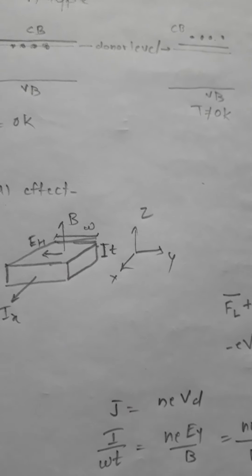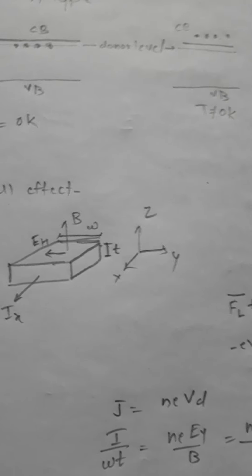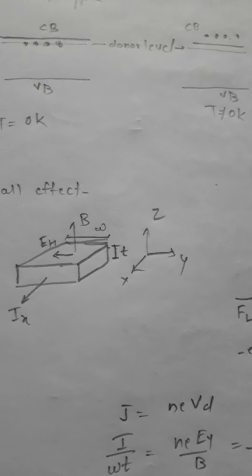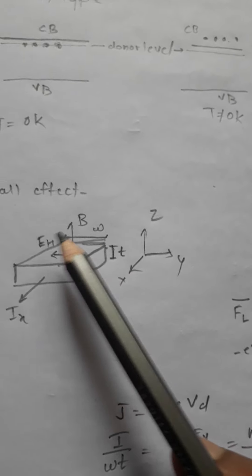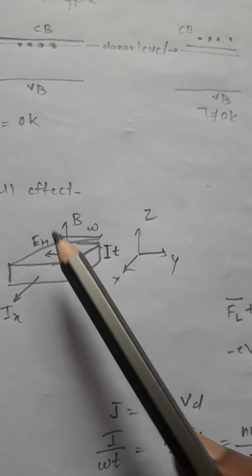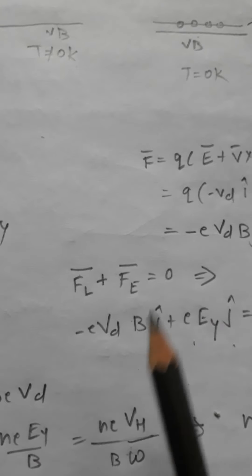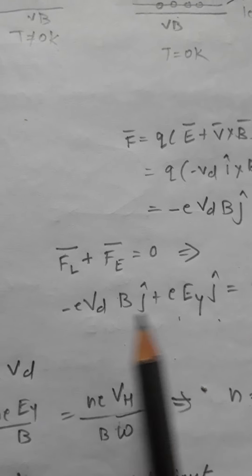This field also exerts force on the electrons. The process of accumulation will go on until the force due to the electric field balances the force due to the magnetic field. This is the equilibrium equation, and from this we get the expression for the drift velocity.